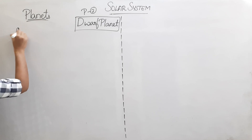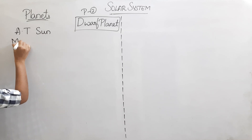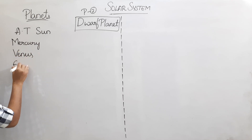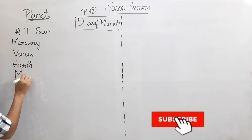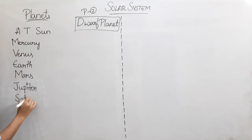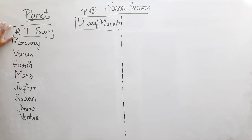According to their distance from the Sun, the planets in order are: Mercury, Venus, Earth, Mars, Jupiter, Saturn, Uranus, and Neptune.